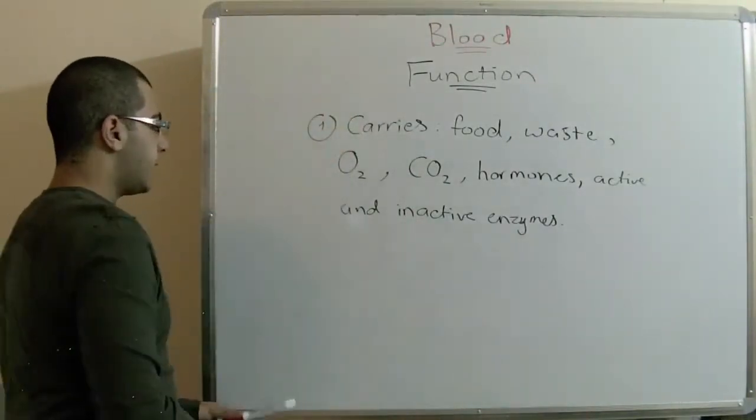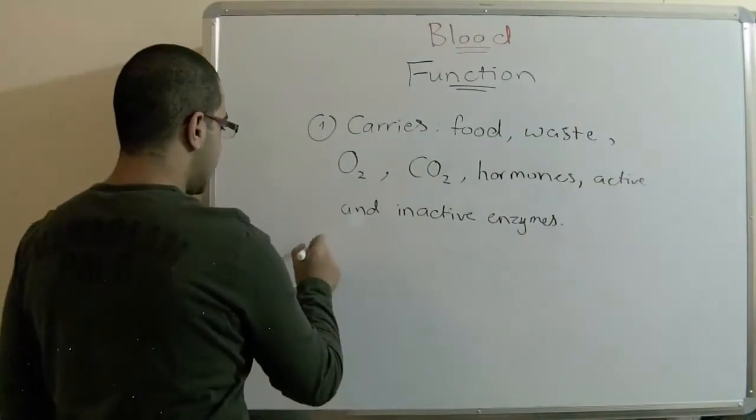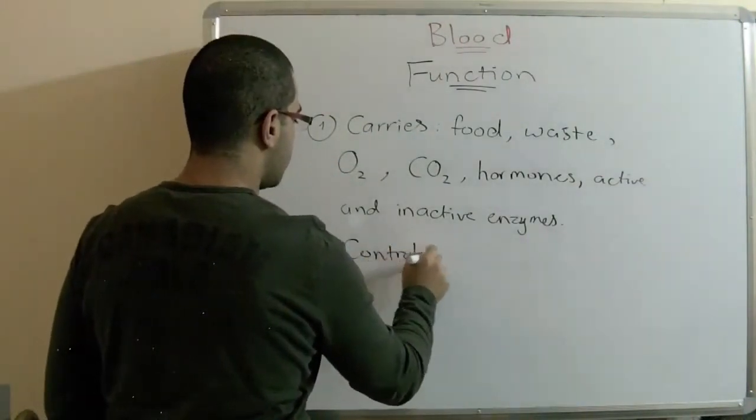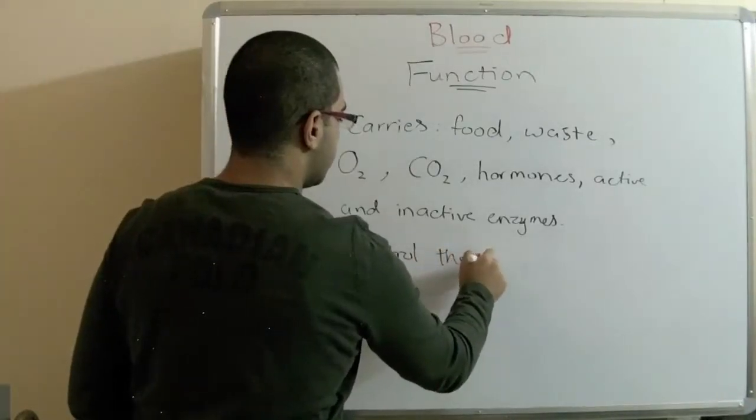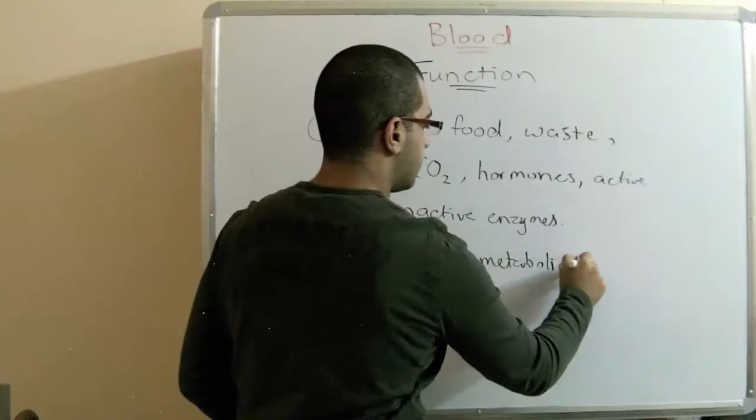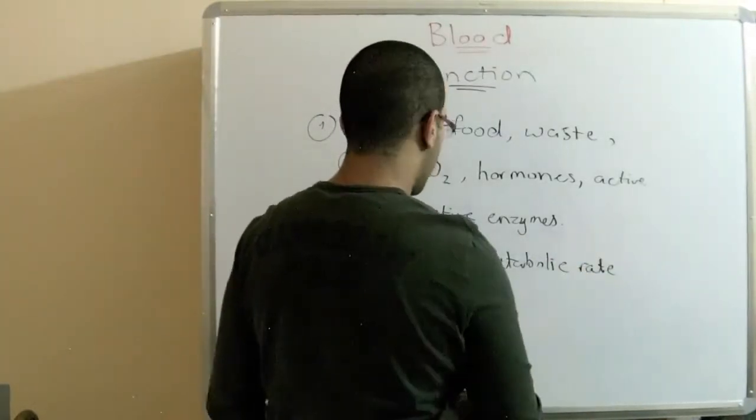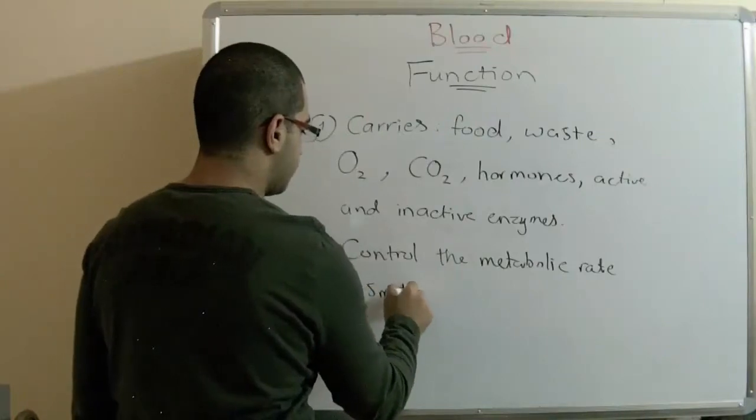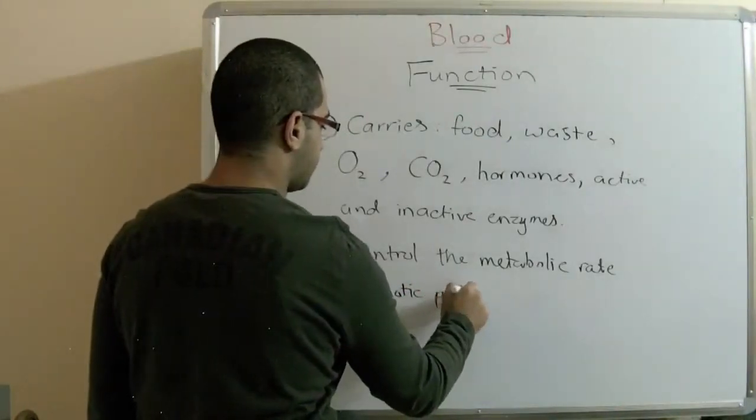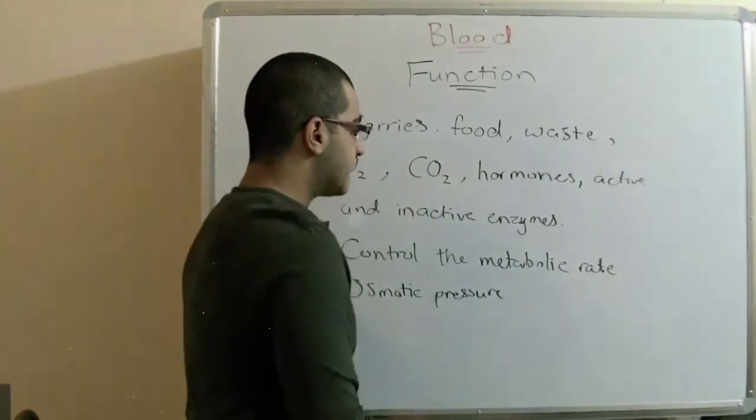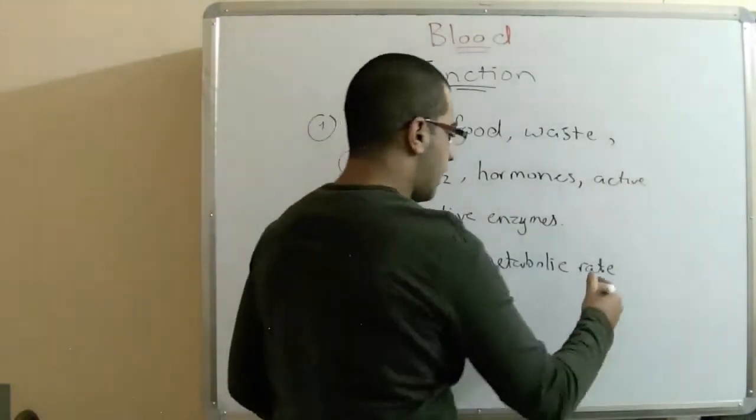The second function of the blood is to control the metabolic rate through controlling something called the osmotic pressure. The metabolic rate is related to the process of metabolism.